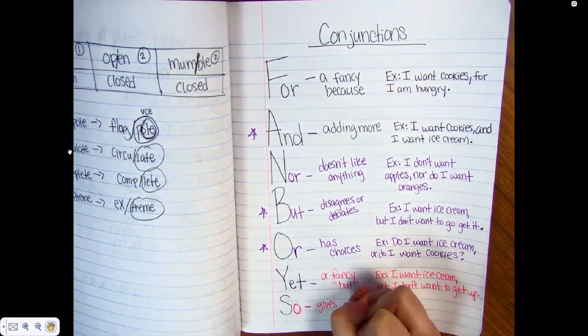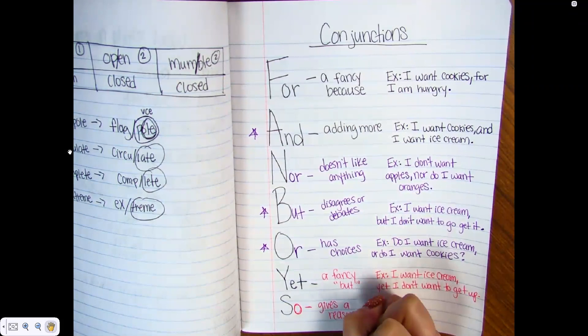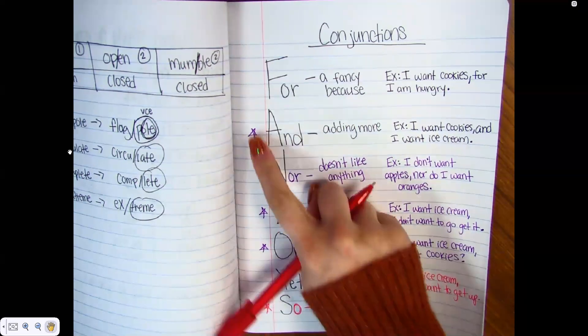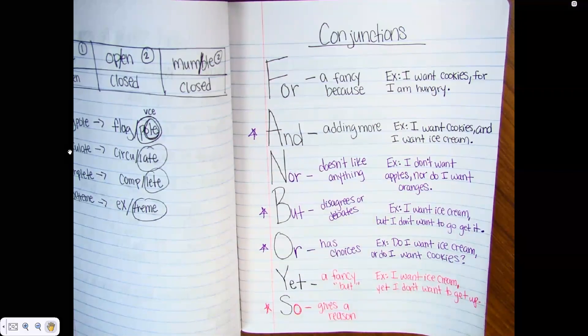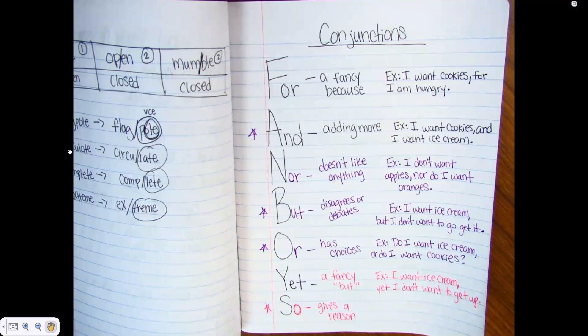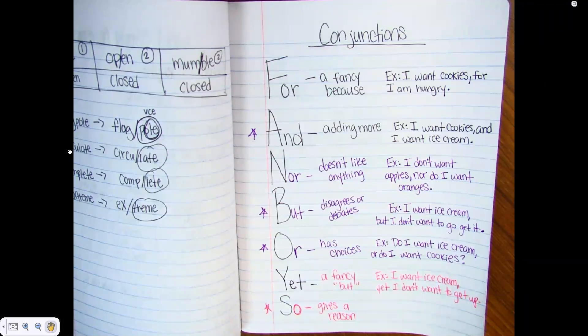So gives a reason. This is another one. You remember how I put my little stars next to our ones we're going to use all the time? So is another one that I will tell y'all that you will probably use a lot, because so is kind of just very natural in our everyday language and our everyday talking that we do. So is going to be another one that we will use a lot.